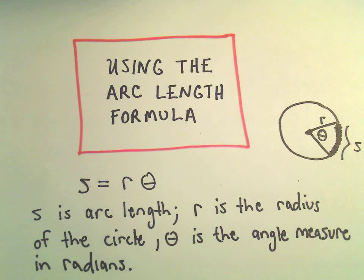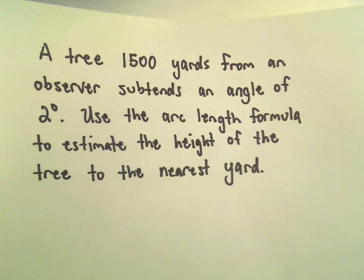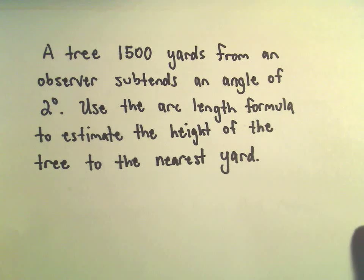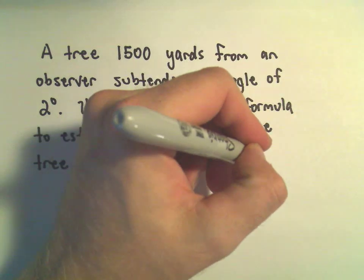Alright, just one more problem here using the arc length formula. In this problem, we've got a tree that's 1500 yards from an observer and that subtends an angle of 2 degrees. We're going to use the arc length formula to estimate the height of the tree.